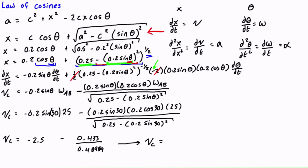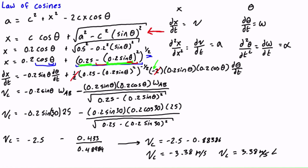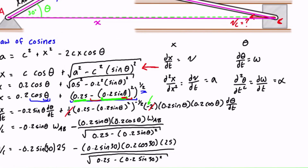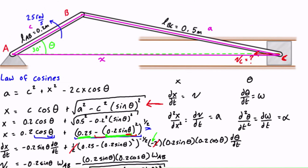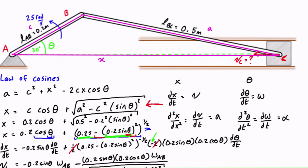This simplifies to vc = −2.5 − 0.433/0.48989 = −2.5 − 0.88386 = −3.38 m/s. The negative sign indicates it is moving to the left, so vc = 3.38 m/s to the left. That is the same value we got in the other three videos where we solved this exact problem with different methods.